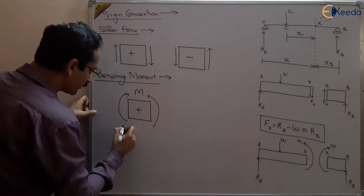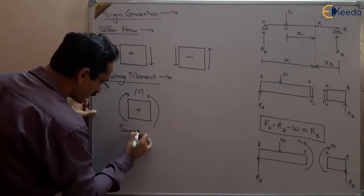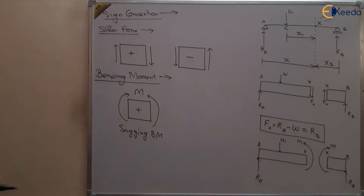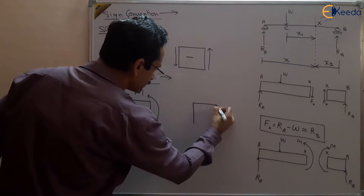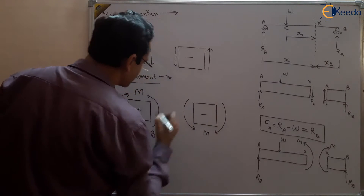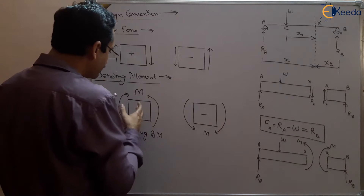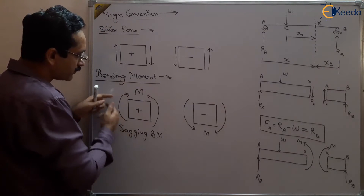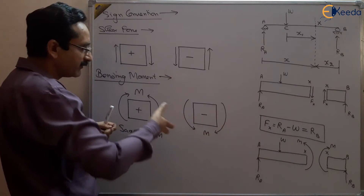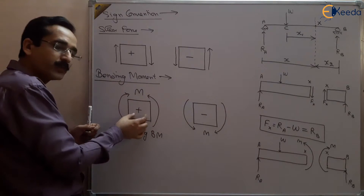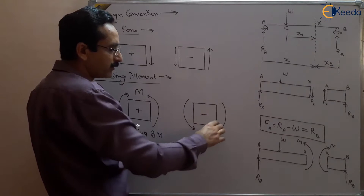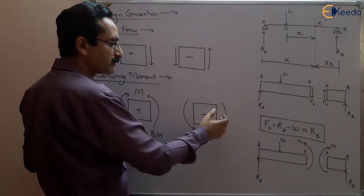For hogging bending moment, we will take the negative sign convention. Or you can say, if the forces on the left side are making a clockwise couple, this will be a positive bending moment, or on the right side if it is making an anticlockwise couple, then it will also be positive. If it is leftward making an anticlockwise couple then it is negative, or if it is rightward making a clockwise couple then it is also negative.